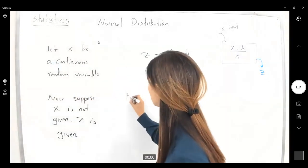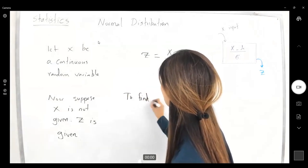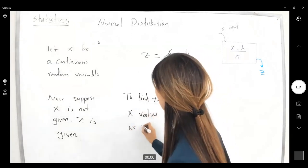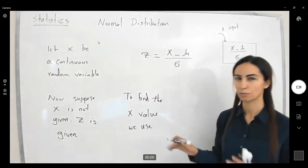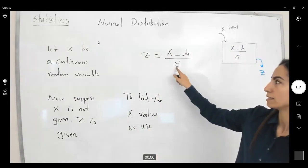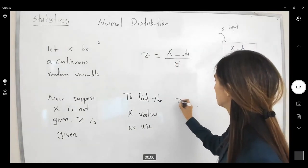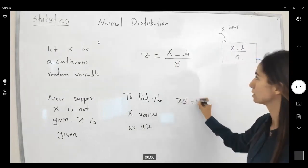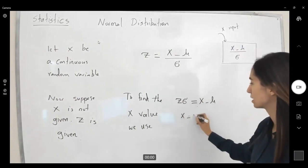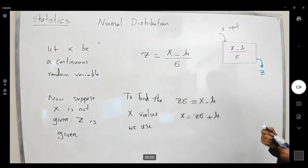To find your x, the x-value, we use just simple algebra. Multiply sigma and z and add mu to both sides. So z times sigma is equal to x minus mu. So x becomes z sigma plus mu.